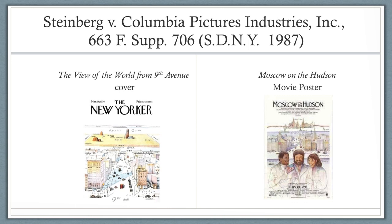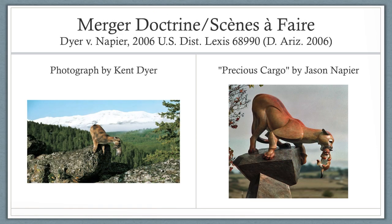There are situations, however, where the idea and expression are so intertwined that there is only one or very few ways of expressing an idea. In such cases, the idea and expression are said to merge. To allow copyright protection would essentially grant a monopoly on the idea. Courts have therefore developed the merger doctrine, which provides that when the idea and expression merge, the expression is not protected by copyright. Courts often apply the merger doctrine when a work is representational of an animal or natural phenomenon. In Dyer v. Napier, a mother mountain lion carrying a cub in her mouth is an idea first expressed in nature. Therefore, a photographer's work to achieve this ideal pose was not copyrightable since the pose was one that naturally occurred and was instinctive in nature.